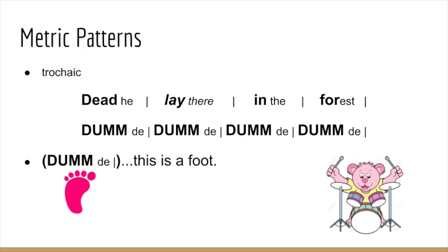Notice how in this slide the pattern is reversed. Now it is a stressed syllable followed by an unstressed syllable. 'Dead he lay there in the forest.' We call this pattern trochaic. How many trochaic feet are in the first line of the poem here? There are four.